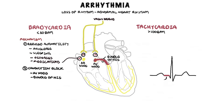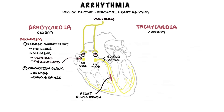However, you can get conduction blocks elsewhere in the heart. For example, ventricular conduction blocks such as blockage of the right bundle branch predominantly prolong the QRS complex but do not cause bradycardia. This is because the action potential is still able to get to the other parts of the ventricle, so it doesn't really result in bradycardia. The same case applies if the left bundle branch is blocked.